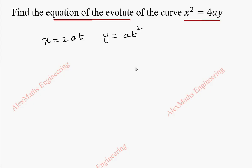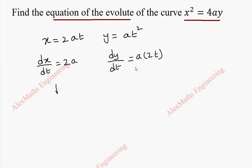From this, we can find dx/dt which is 2a, and dy/dt is a into 2t. So now dy/dx is a into 2t divided by 2a. After cancelling, we get t.